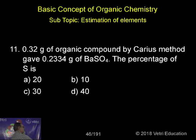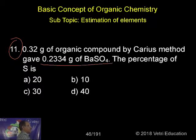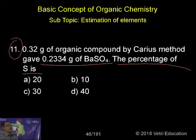Now question number 11. 0.32 grams of organic compound by Carius method gave 0.2334 grams of barium sulfate. The percentage of sulfur is: a) 20, b) 10...